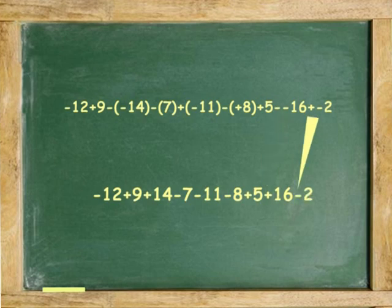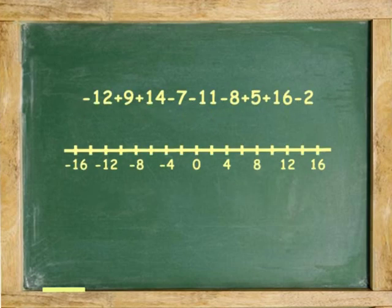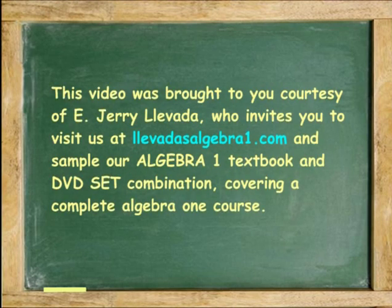Find the answer by moving right and left on the number line. Starting at 0, to the left 12, to the right 9, to the right 14, to the left 7, to the left 11, to the left 8, to the right 5, to the right 16, to the left 2. Stopping at 4. That's it.